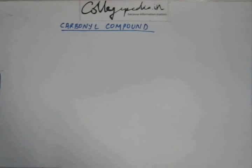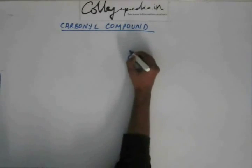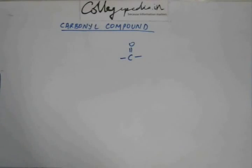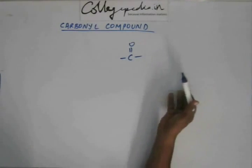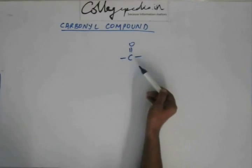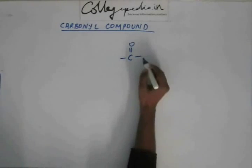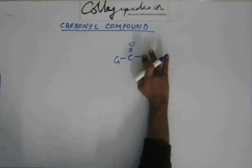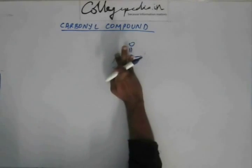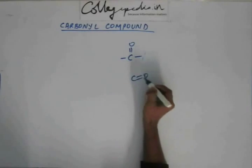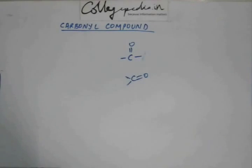Hello everyone, today we are going to start a new chapter called carbonyl compounds. This group is called the carbonyl group — we have seen this before — C double bond O having two free bonds, because carbon having valence 4 would make two bonds with oxygen and the remaining two valences of carbon would be free so it can be attached to any group. This group, C double bond O having two free bonds, is called the carbonyl group. Compounds having this carbonyl group are called carbonyl compounds.